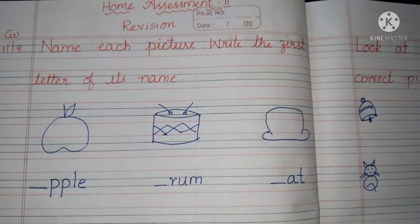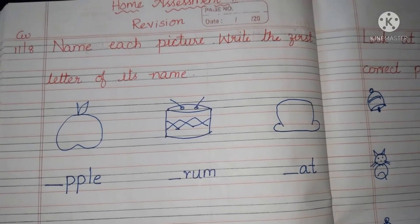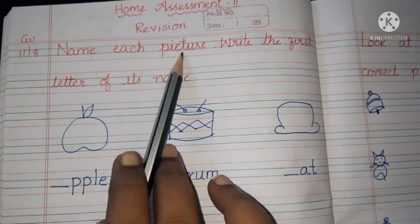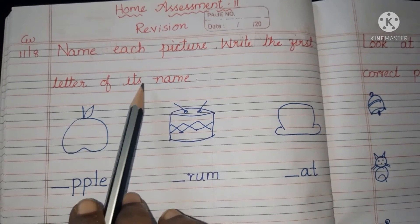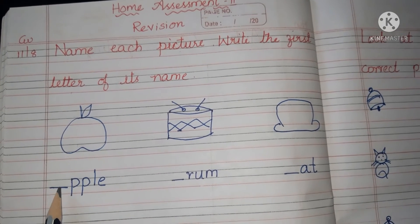See, yesterday we have completed capital set and small set children in revision. So today we are going to learn about name each picture, write the first letter of its name. See the picture and name it children and write the first missing letter.